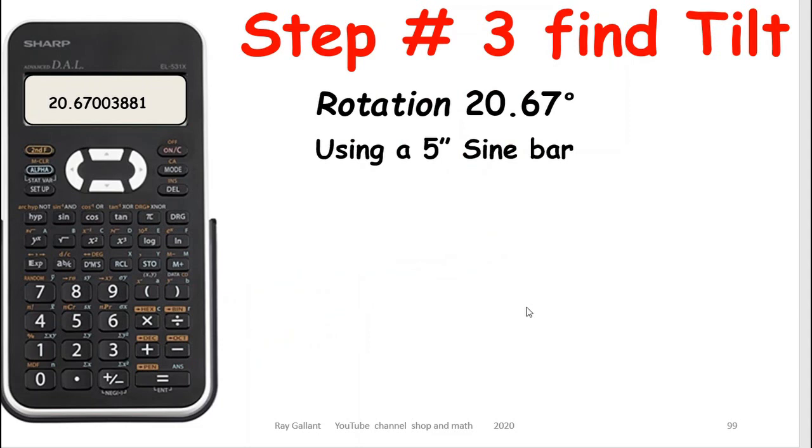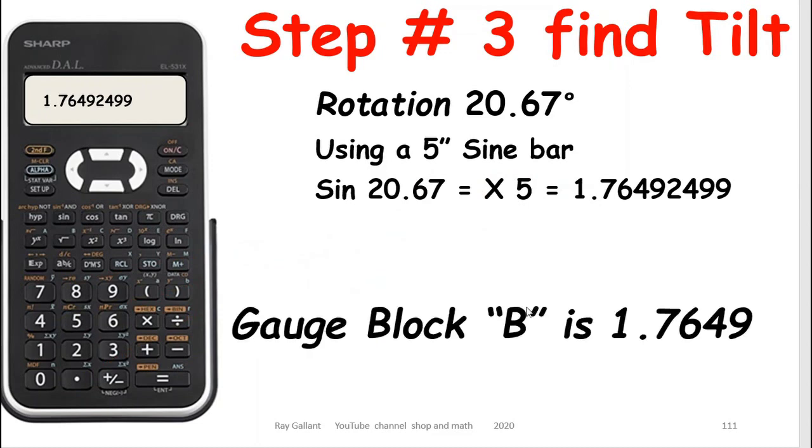Now using a 5 inch sine bar, we need to calculate our gauge block setup. So using a 5 inch sine bar, we're going to calculate our gauge block height to be 1.7649.